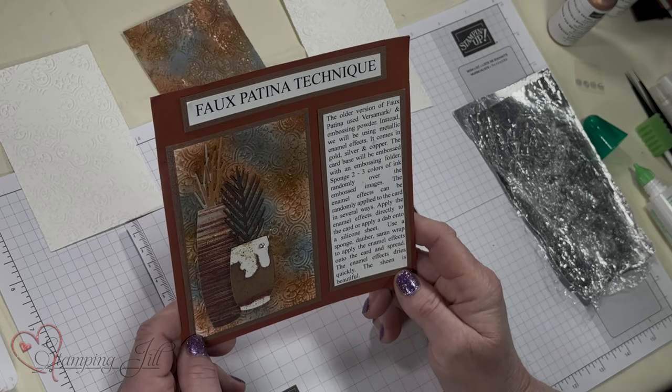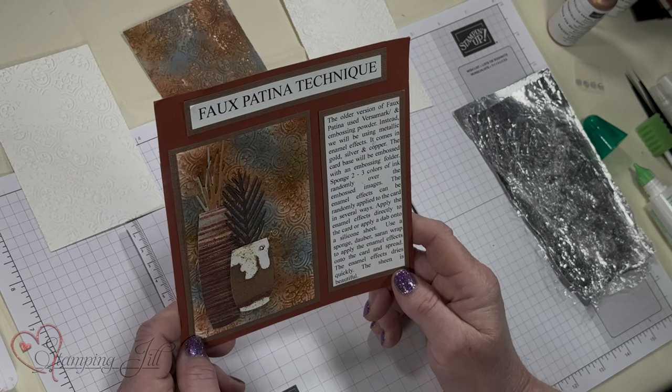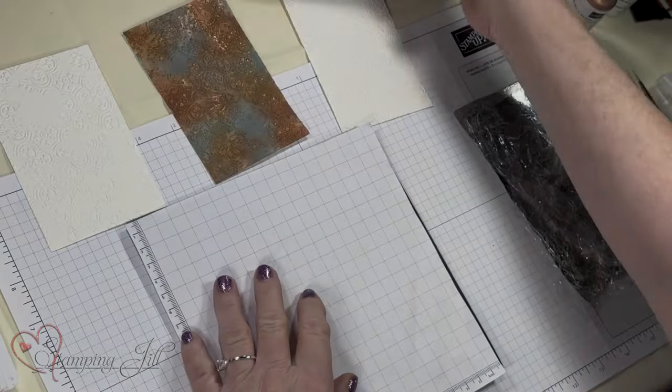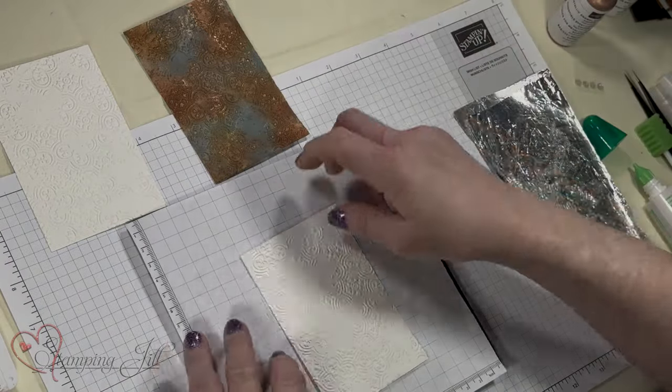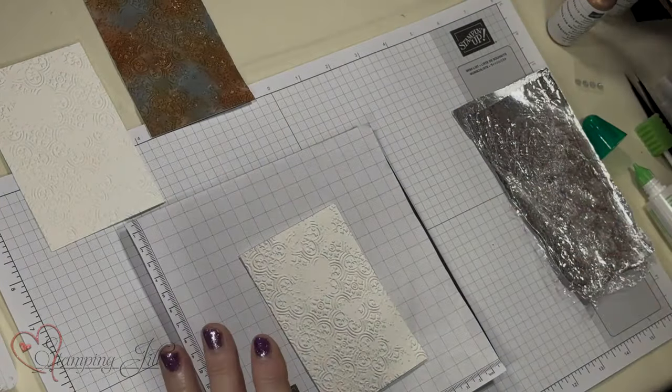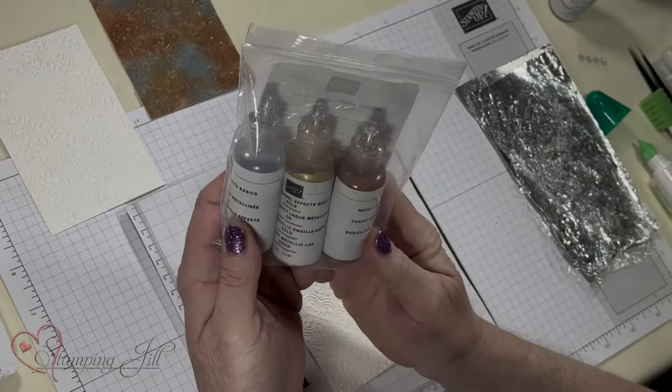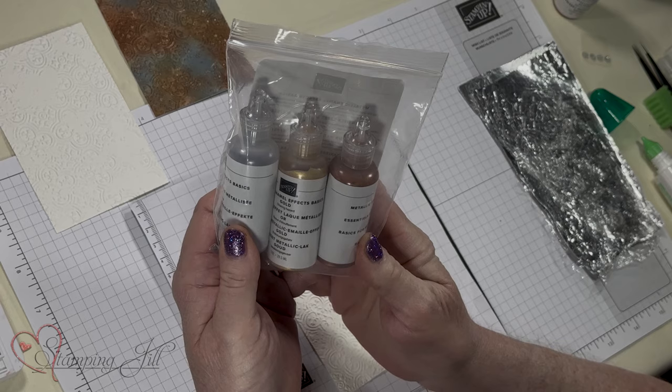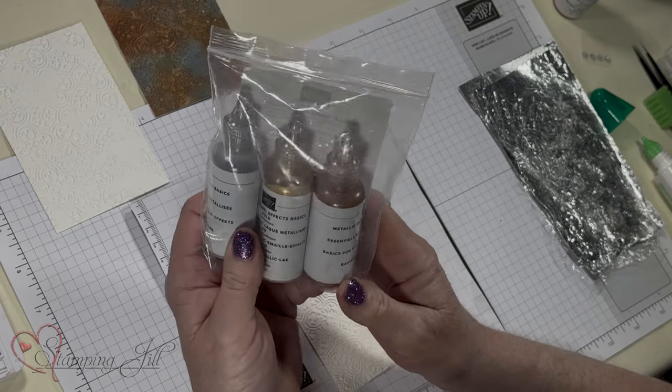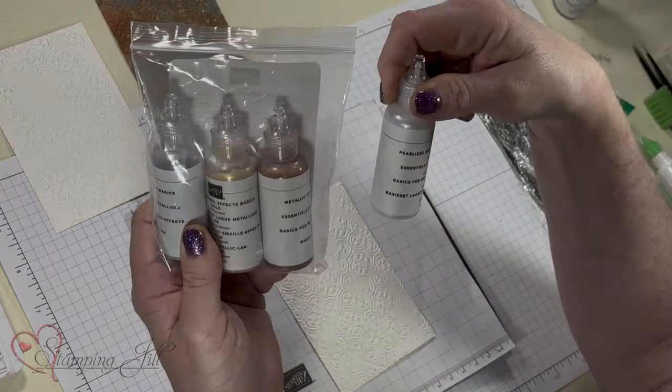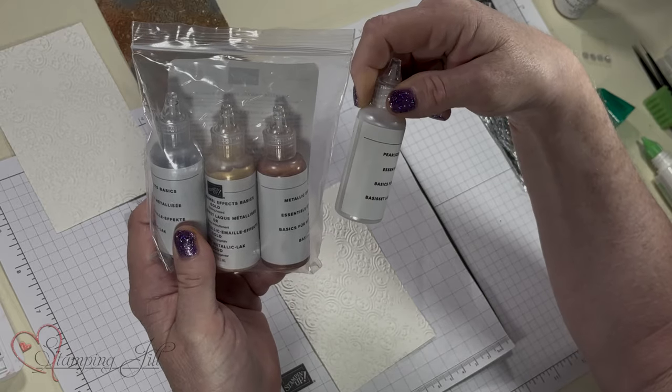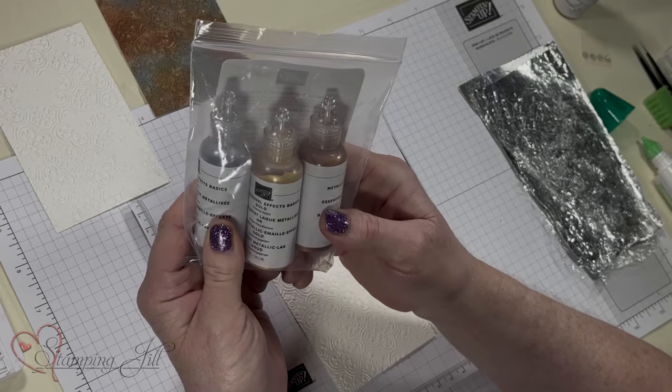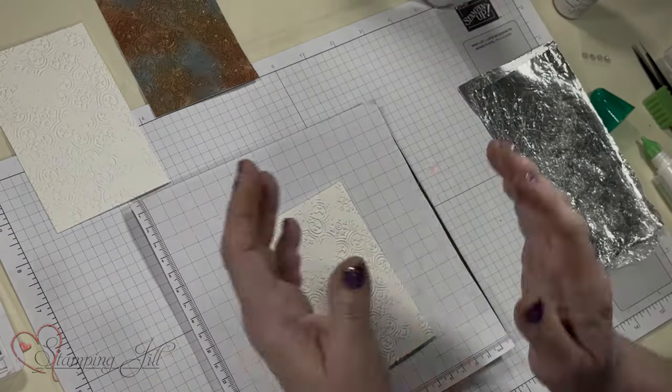So much easier than in the old days when you use Versamark embossing powder and an embossing folder. So what we're going to do today, I'm going to show you how easy it is. The best thing in the catalog that you just really didn't know about are these metallic enamel effects. There's also a set that are pearlized that come in white, red and black. But these metallic ones are phenomenal.